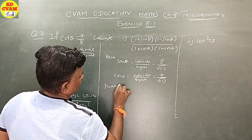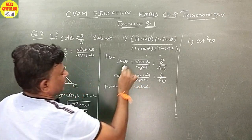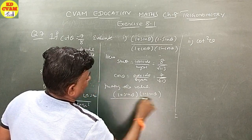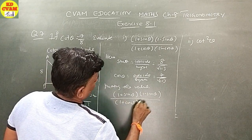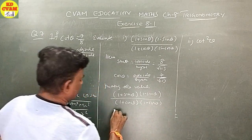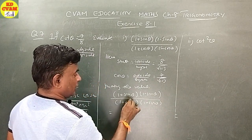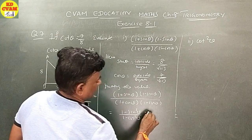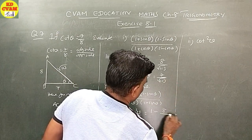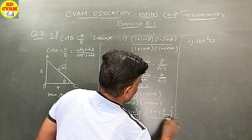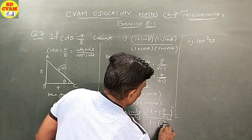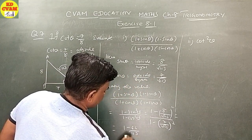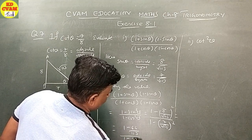Putting the values into the expression: (1 + sin theta)(1 - sin theta) upon (1 + cos theta)(1 - cos theta). This simplifies to (1 minus sin squared theta) upon (1 minus cos squared theta). That is, 1 minus (8 upon root 113) squared, upon 1 minus (7 upon root 113) squared. Equals 1 minus 64 upon 113, upon 1 minus 49 upon 113. Equals (113 minus 64) upon 113, over (113 minus 49) upon 113.